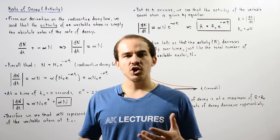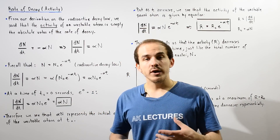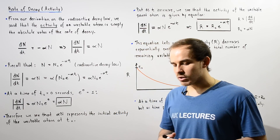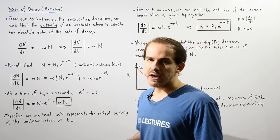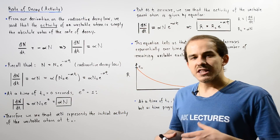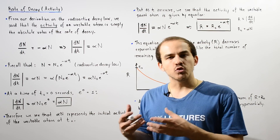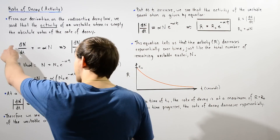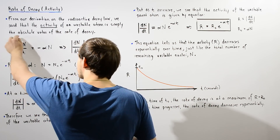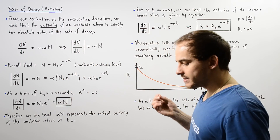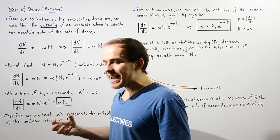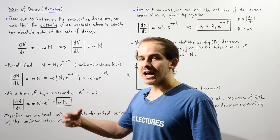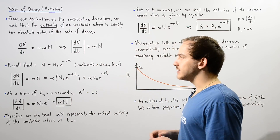In our discussion on the radioactive decay law, we define a concept known as the activity of our unstable atom. The activity of our unstable atom is equal to the absolute value of the rate of decay of that unstable atom. Recall that the rate of decay is given by taking the derivative of n with respect to t, where n is simply the remaining number of isotopes or atoms that have not yet undergone radioactive decay.